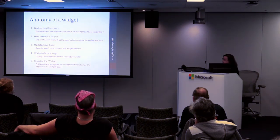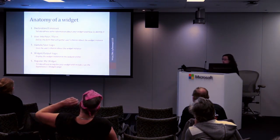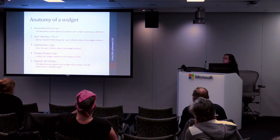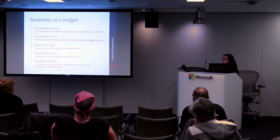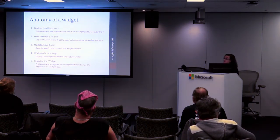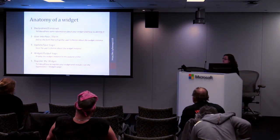Once we've created that form, we need an update/save piece of logic so the user's choices are saved in the system. Most importantly, we have the widget output logic, which turns that saved input into the output on screen when somebody visits the front end. The first four pieces all go into a class, and then the fifth piece is to actually register that class. The beauty of WordPress is that we get to build upon the widget structure WordPress has already built for us.